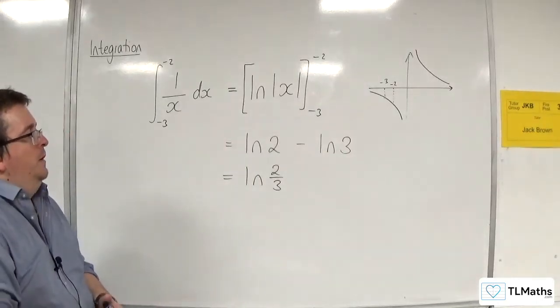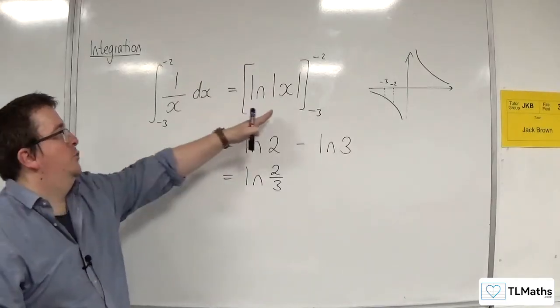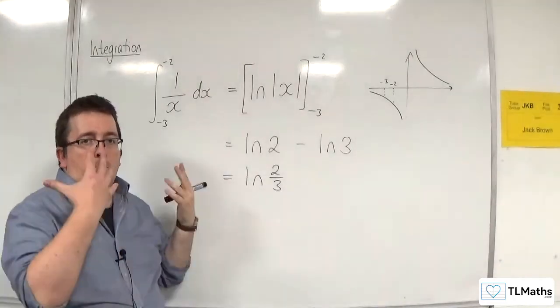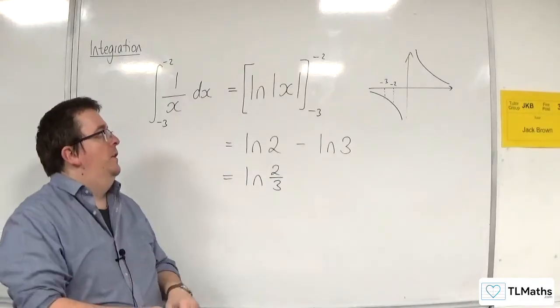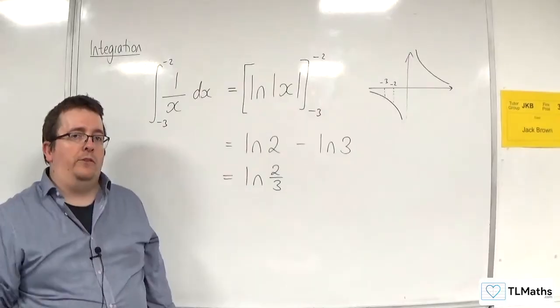And so there we have how we can use 1 over x integrated to the natural log of mod x. So you must make sure you put the modulus signs around the x when you integrate 1 over x in this way.